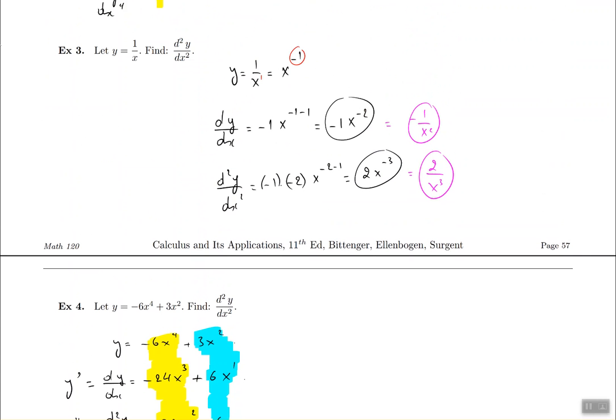Here is example number 3. We did that on another video. It was 1 over x, so I have to rewrite the 1 over x as x to the power of negative 1, then find the first and second derivative.